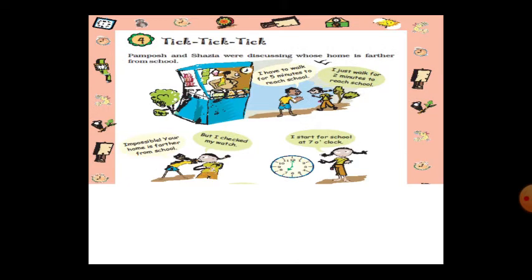Chapter 4 name is 'Tick Tick Tick'. There is one story here. Pampush and Shazia were discussing whose home is farther from school. Both are friends. Pampush is telling: I have to walk for 5 minutes to reach school. And Shazia is telling: I just walk for 2 minutes to reach school. Pampush is telling it is impossible because Shazia's home is so far from school compared to his.